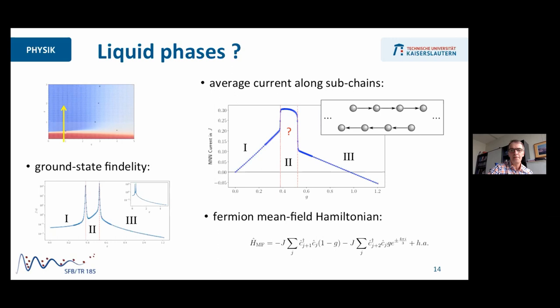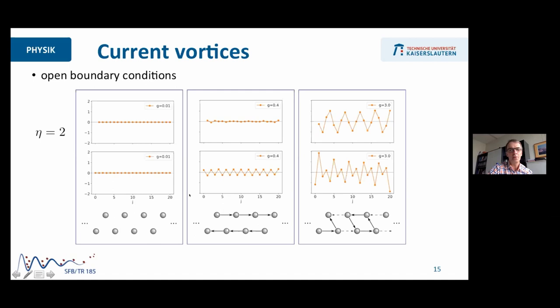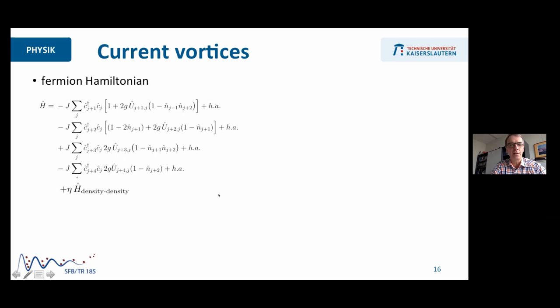The story gets even more interesting if we look not just at the average currents, but we look at the spatially resolved currents. Again, this increasing strength of the second-order hopping. If the second-order hopping is zero, then of course everything is trivial. If you crank it up a little bit, you see these two constant currents flowing along the edges of the chain. But if you increase it further, then something else happens. Then these currents actually break up, and you see that they are forming vortices or vortex lattice. You see that there are local currents forming. And the question is, what is the reason for these current vortices?